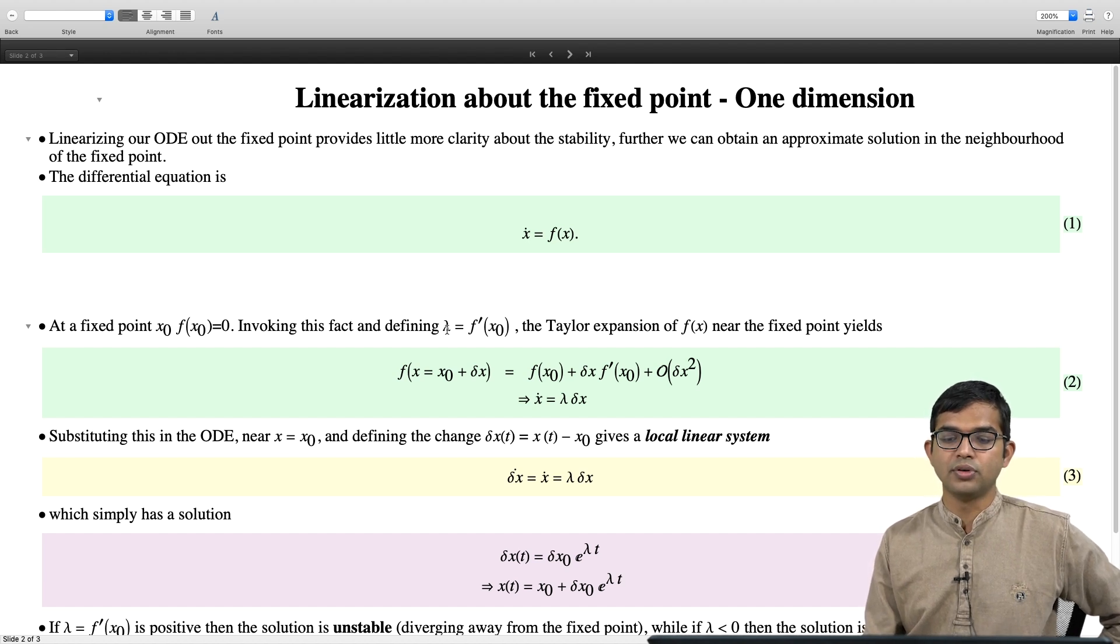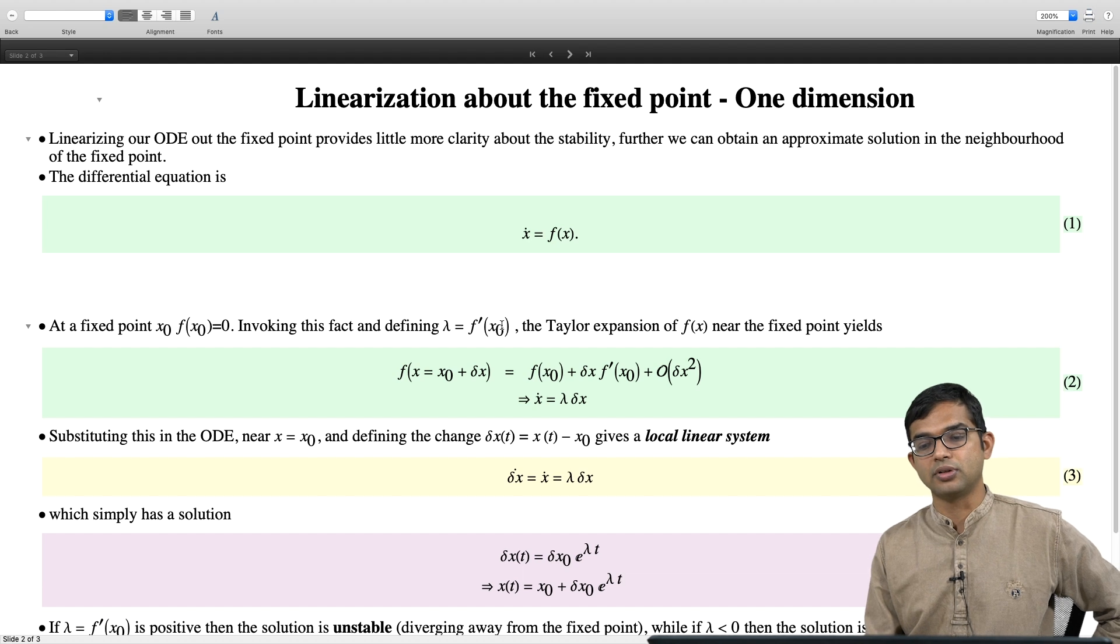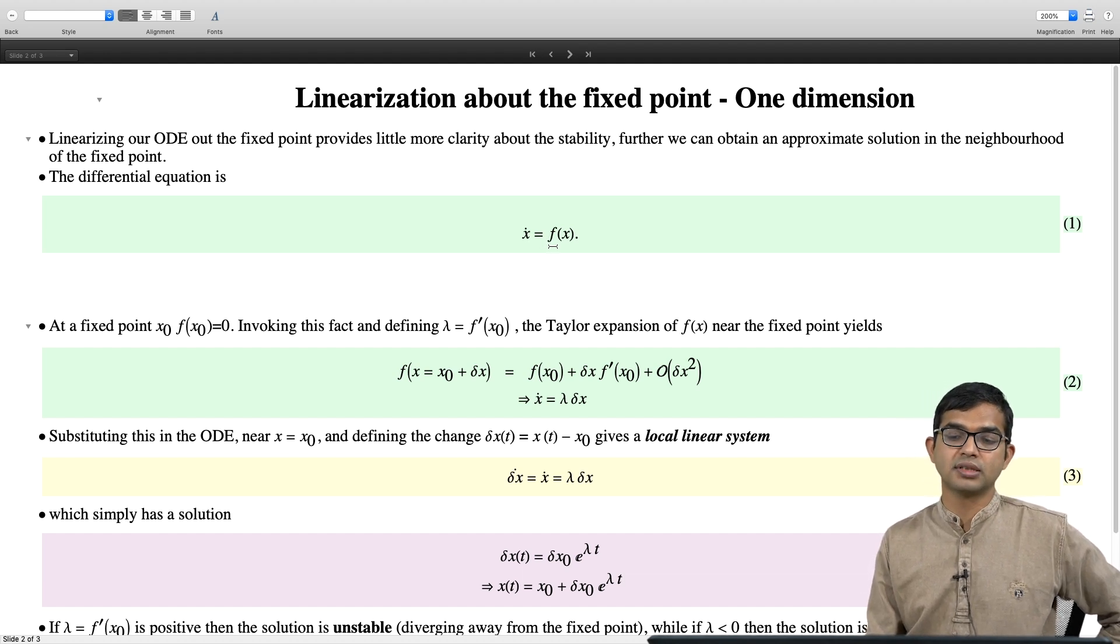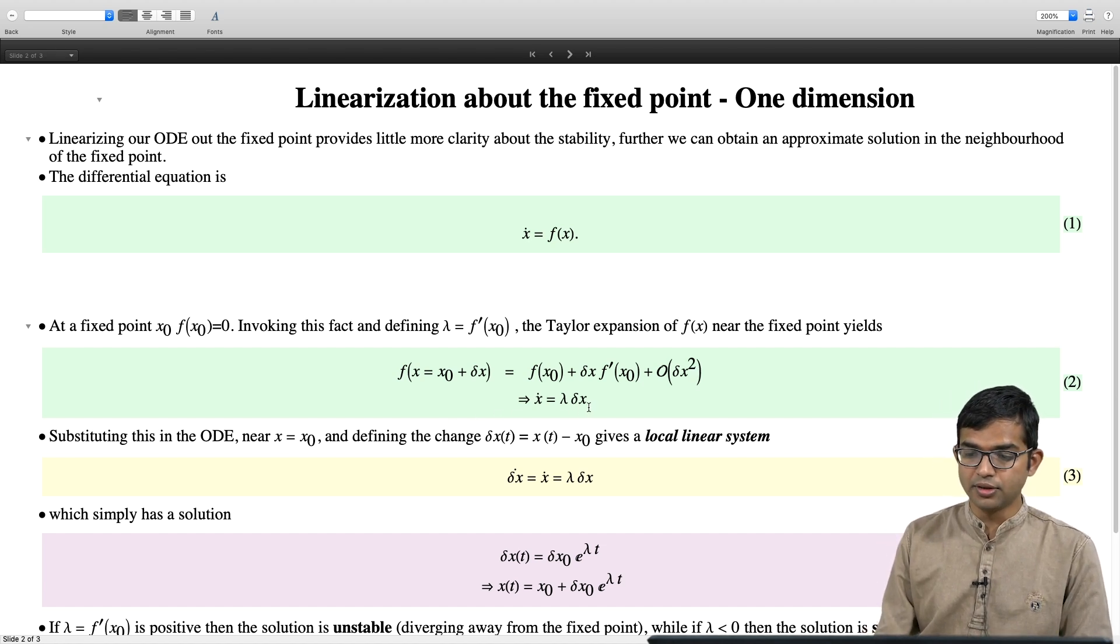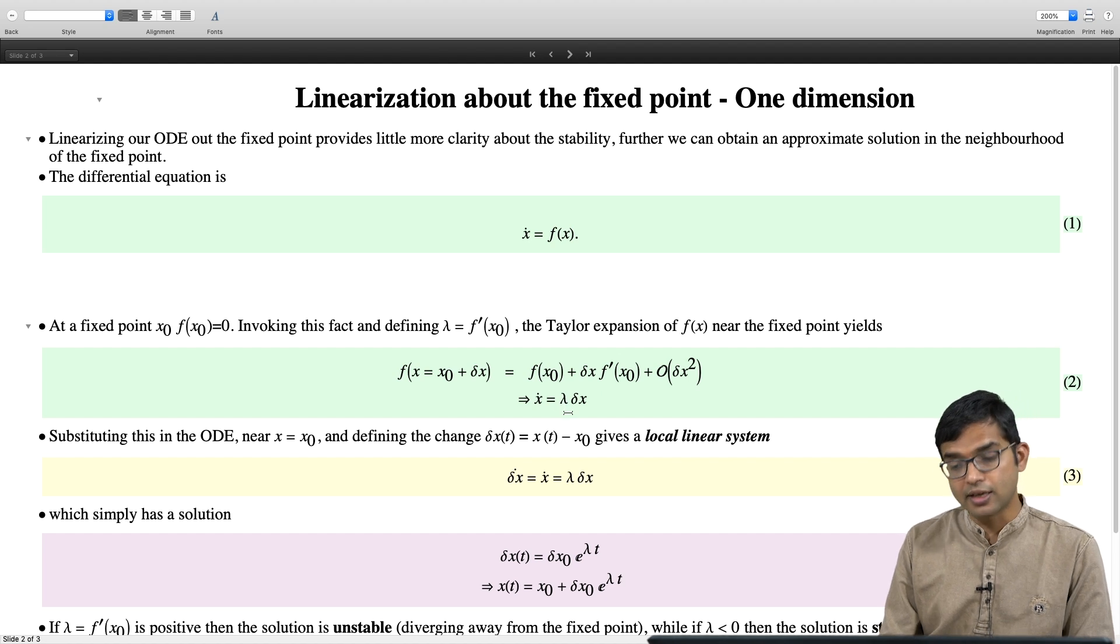Invoking this fact and if you define lambda equal to f prime of x naught, it turns out that the derivative of this function f of x at x naught gives you some information. The Taylor expansion of f of x near the fixed point will give you f of x naught plus some delta x times f prime of x naught plus order of the second order term. Basically to first order, it is going to evolve as x dot equal to lambda times delta x.